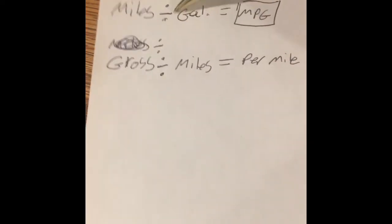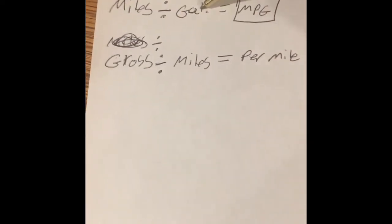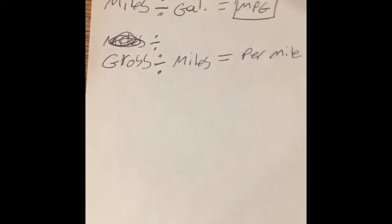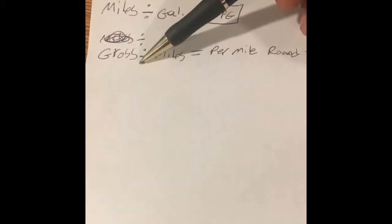In simple terms, for miles per gallon: however many miles divided by however many gallons of fuel you burn equals your miles per gallon. Then for figuring out your per mile round trip, you do your gross that you made for whatever determined amount of time.